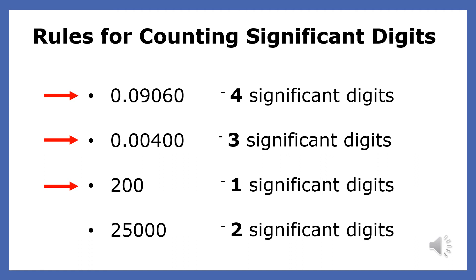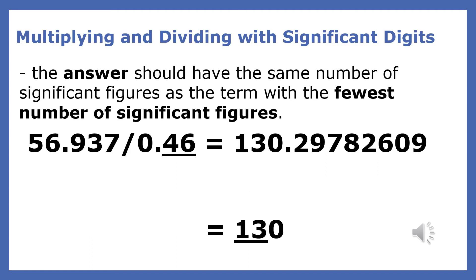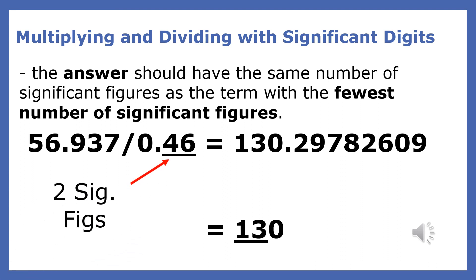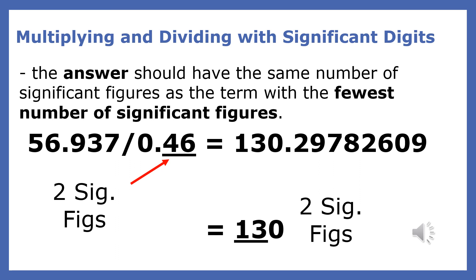So leading zeros in a decimal don't count, and trailing zeros in a decimal do count. When multiplying and dividing significant figures, your answer must reflect the number of significant figures in your equation. With multiplication and division, your answer should have the same number of significant digits as the term with the fewest significant digits. The number in our equation with the smallest number of significant figures is 0.46 — since it has two significant digits, our answer should also have two significant figures.